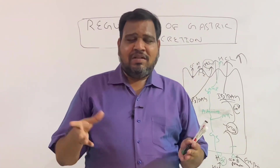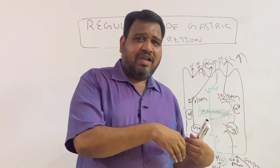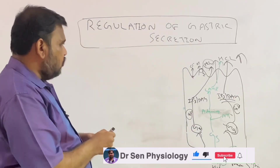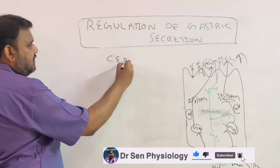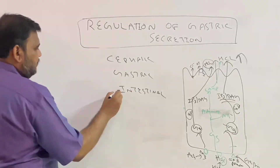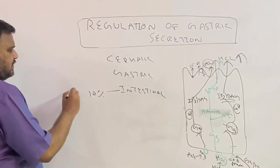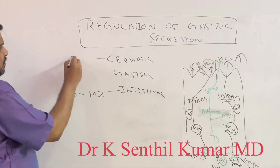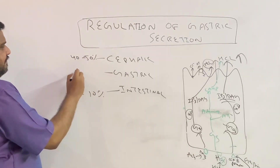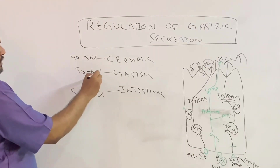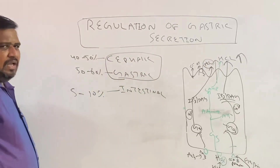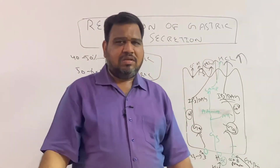Now I will link these mechanisms to the phases of gastric secretion. There are three phases: the cephalic phase, the gastric phase, and the intestinal phase. The intestinal phase accounts for only 5–10% of secretion. The cephalic phase accounts for about 40–50%, and the gastric phase about 50–60%. These two are the most important phases.